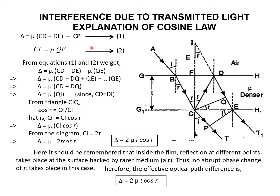Substituting Cp equals mu times QE into the first equation, we get delta equal to mu(Cd + DE) minus mu times QE. Expanding the terms, mu times QE cancels with minus mu times QE. Therefore, delta equals mu times (Cd + Dq). But Cd plus Dq equals IQ from the diagram, because from the triangle, Cd equals Id, so Cd plus Dq equals Id plus Dq, which is IQ.